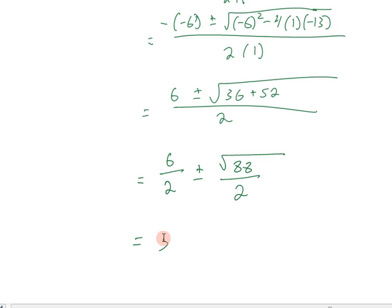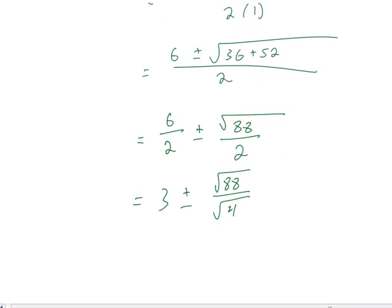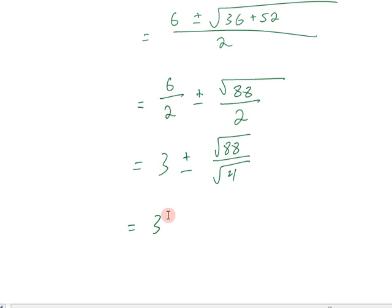6 over 2 is 3 plus or minus the square root of 88. To do that, I need to make them both square roots. So that's the square root of 88 divided by the square root of 4. This allows me to say 3 plus or minus the square root of 88 over 4, the square root of all of that.